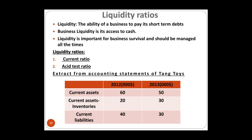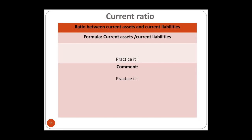The current ratio is current assets divided by current liabilities. It measures whether the current assets of the business can cover its current liabilities. Don't confuse this with working capital, which was current assets minus current liabilities. The current ratio is a division, giving a ratio figure.